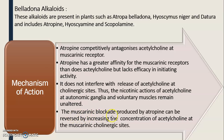The muscarinic blockade produced by atropine can be reversed by increasing the concentration of acetylcholine at the muscarinic cholinergic sites. If we increase the acetylcholine concentration, the action of atropine will ultimately be reversed.